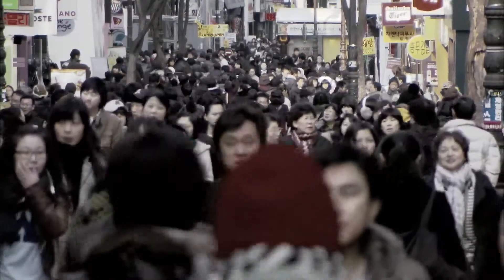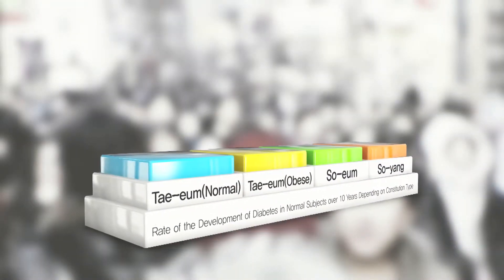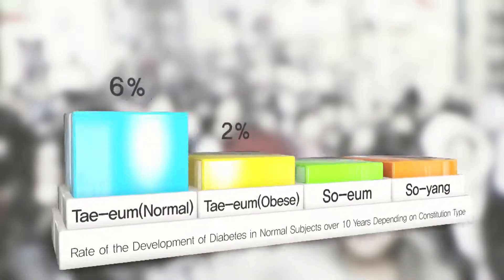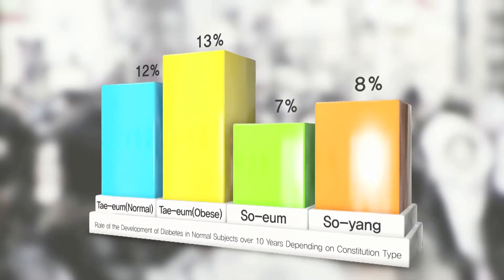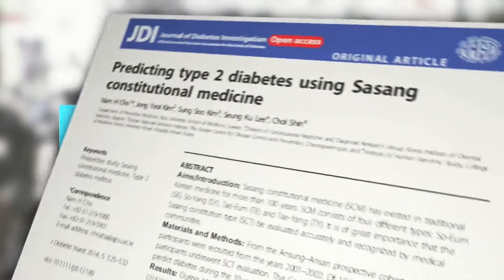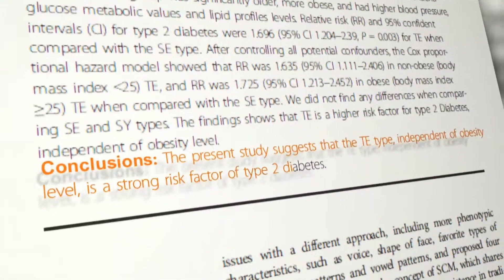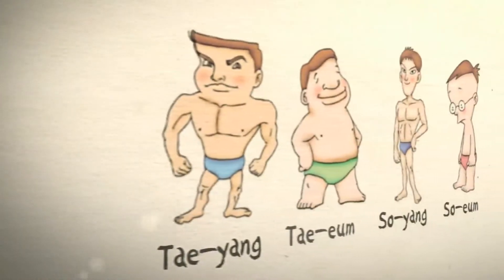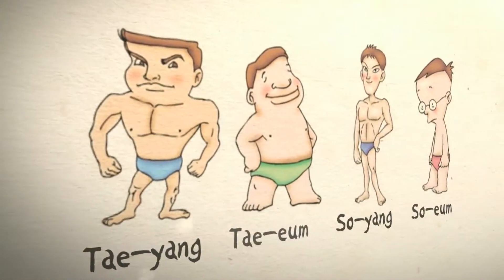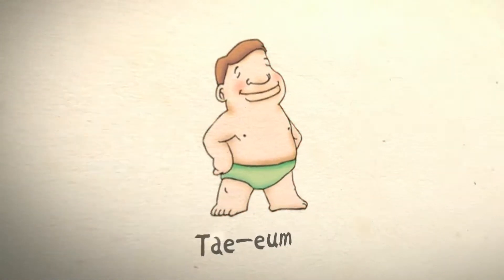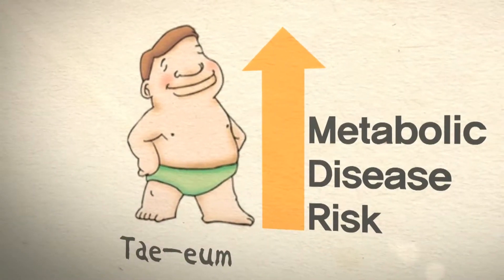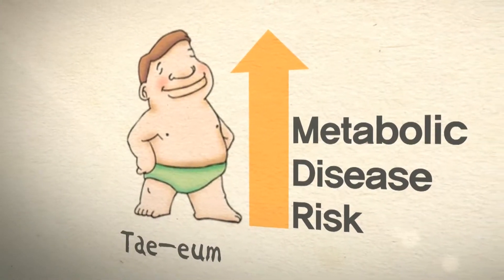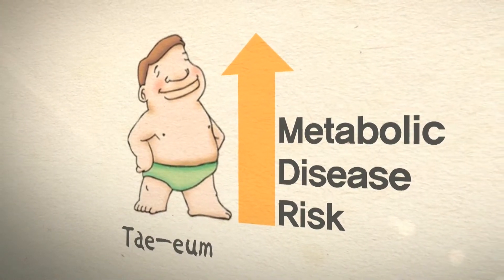In accordance with a follow-up study on diabetes with 2,500 subjects, the research showed subjects with a Taeum constitution had a diabetes rate nearly two times higher than subjects with the Soeum constitution, published in the international journal Journal of Diabetes. The results scientifically prove that subjects with a Soeum constitution who have a weak digestive function had a higher risk of developing metabolic diseases.